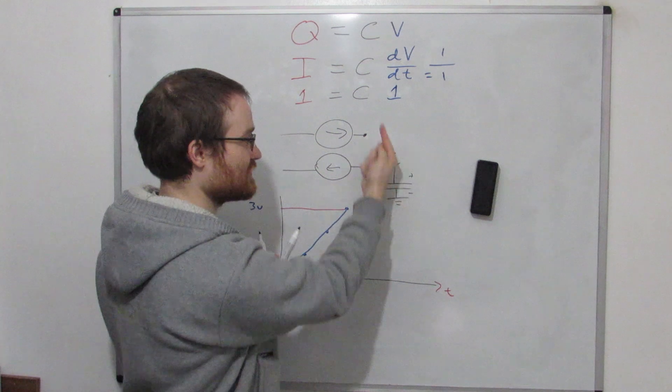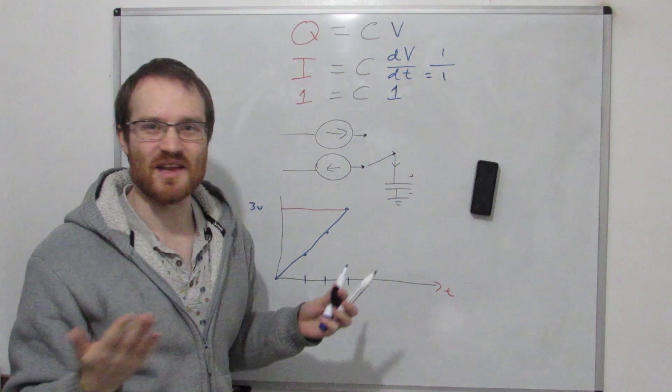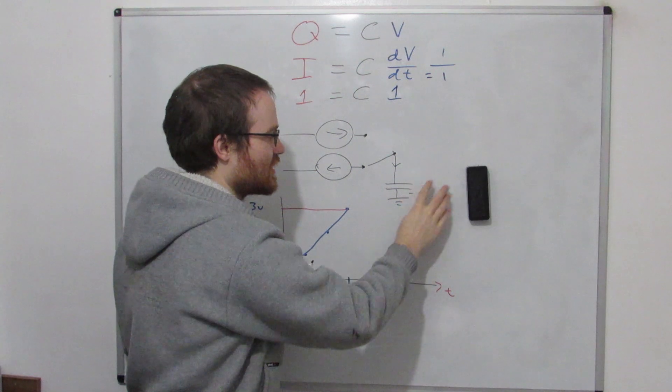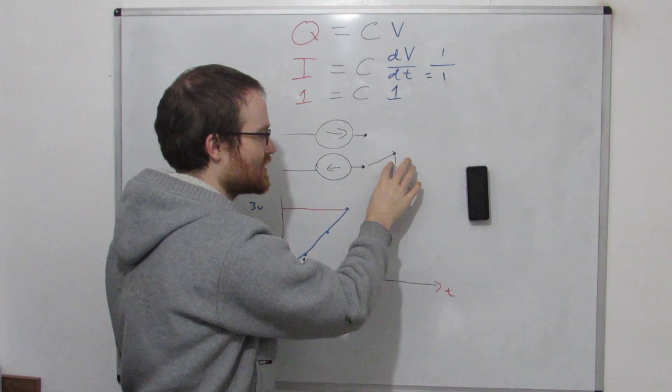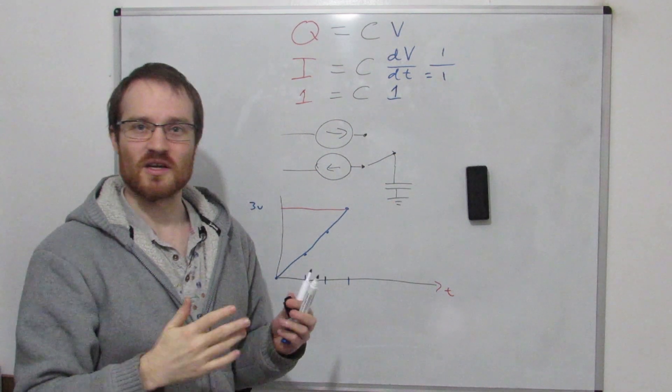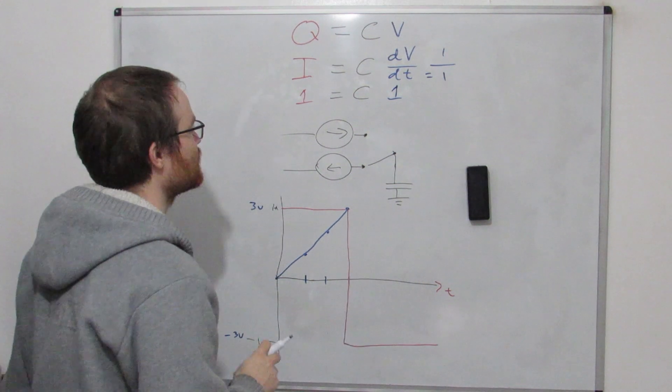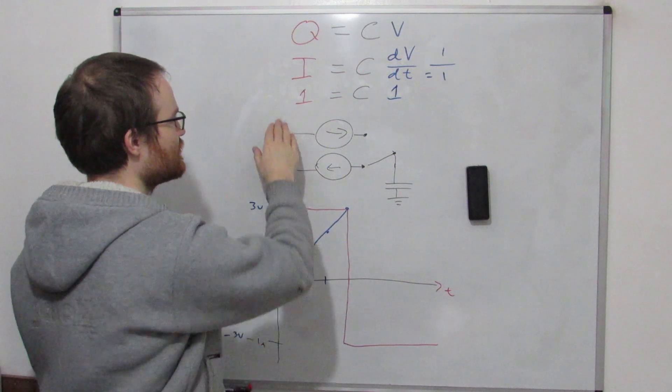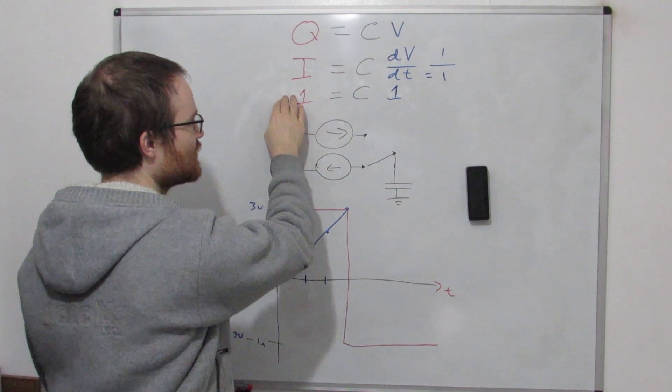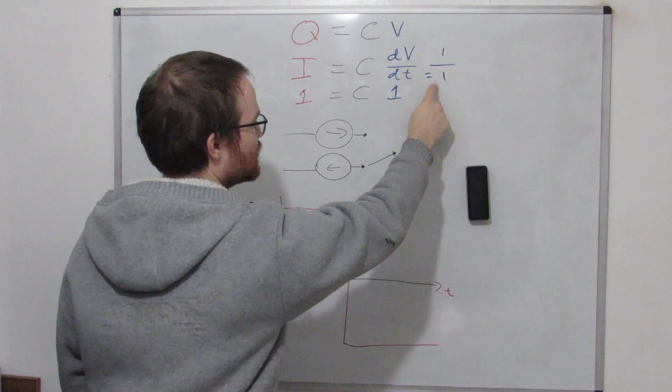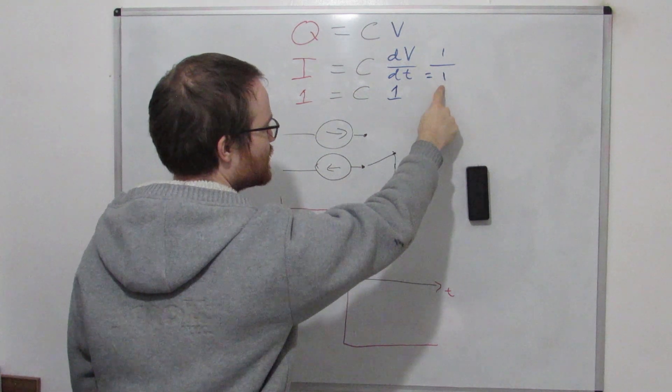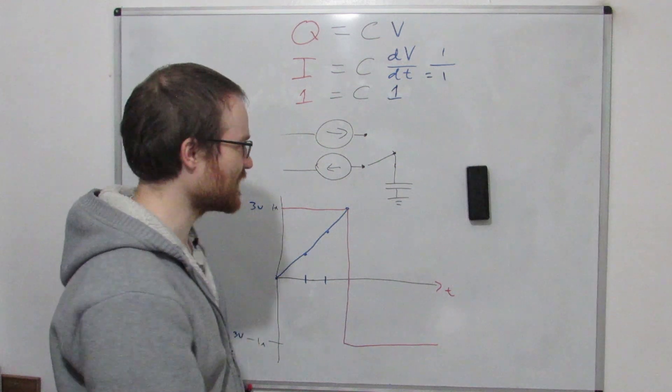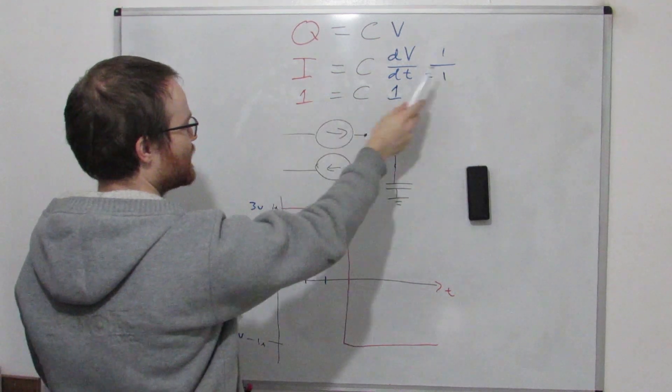By convention, we always say current is flowing like this, and the voltage drop is like this. If the current is actually flowing this way, then we're just saying that it's a negative current flowing this way. That might seem kind of a confusing thing to do, but it's just to keep everything squared up, and make sure all the maths works out. Remember, the current is proportional to how the voltage changes. So if we've set the current to minus one, then now our time is going to be still one.